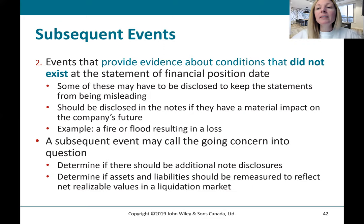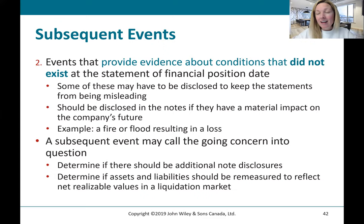The second type of subsequent event provides evidence about conditions that did not exist at the statement of financial position date. Some of these may need to be disclosed to keep the statements from being misleading. If they have a material impact on the company's future — for example, if the company burns down — that doesn't relate to what happened at December; the company wasn't already burning down, but it could materially impact the future of the company, so it would need to be disclosed in the notes. However, it would not change any of our measurement as at December 31st.